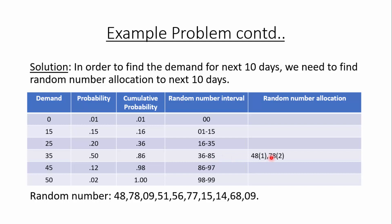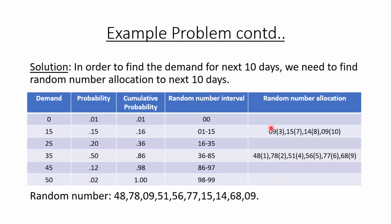The third random number is 9, which lies in the interval 01 to 15, so the demand for day 3 is 15 cakes. We similarly find the random number allocation for all 10 random numbers, identifying the corresponding demand for each day.